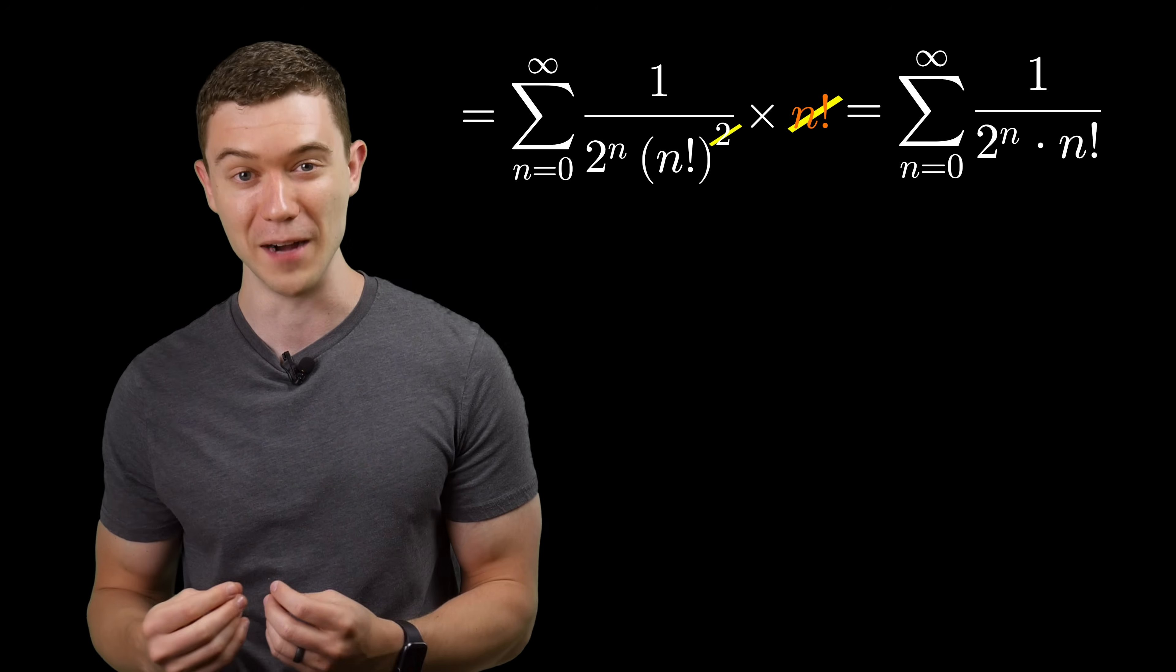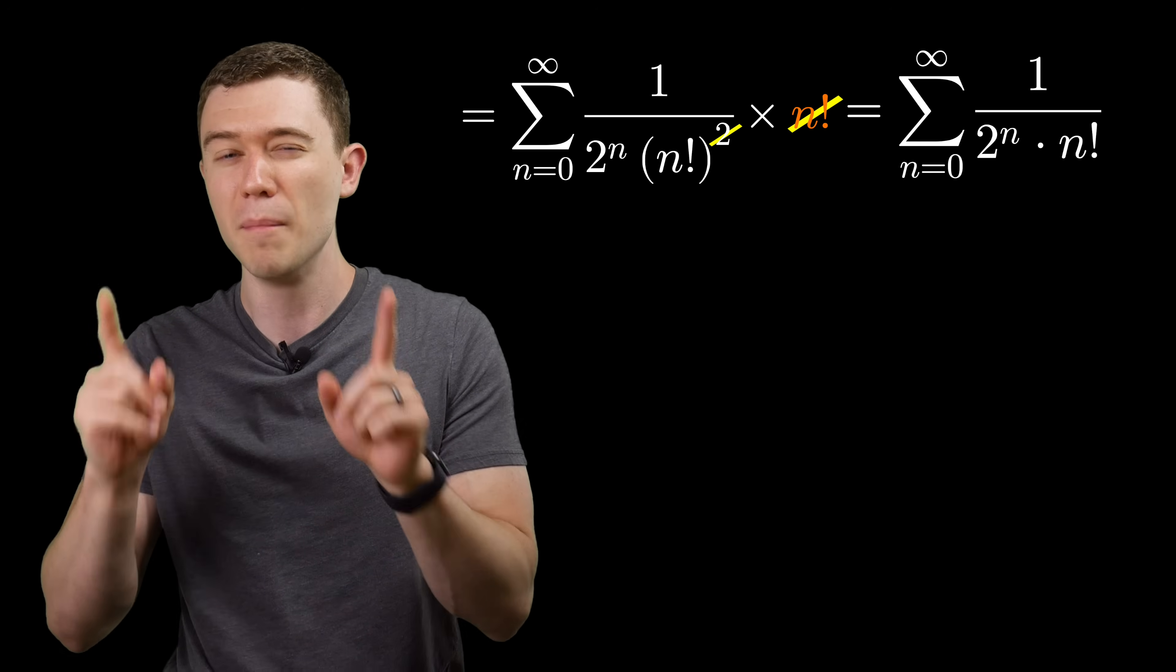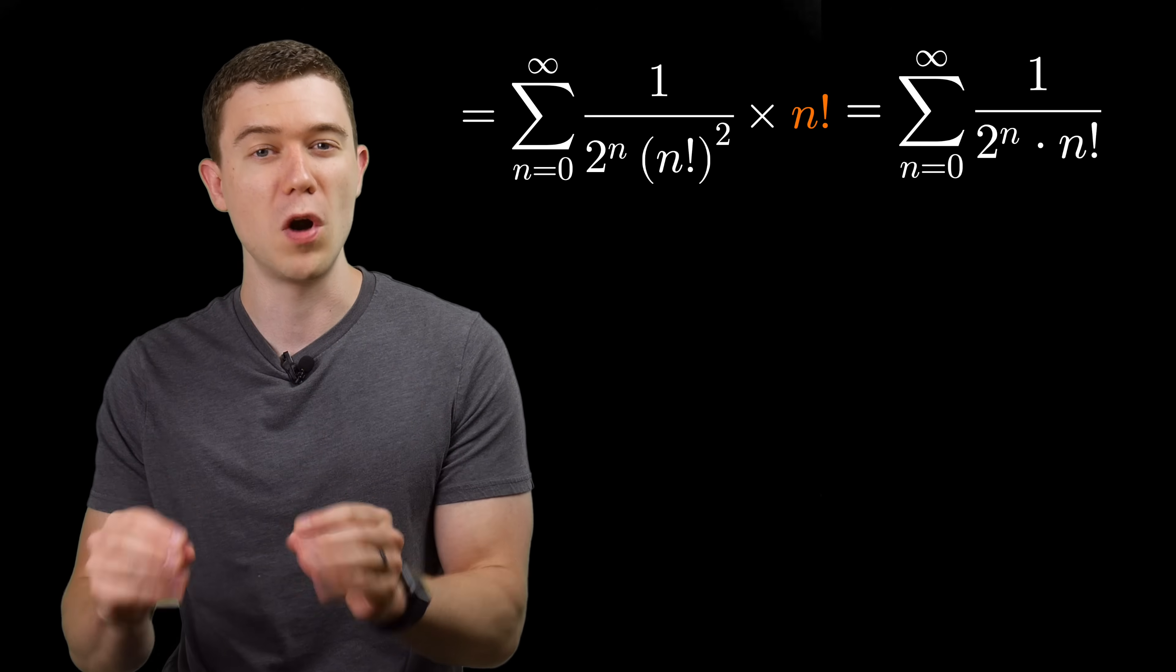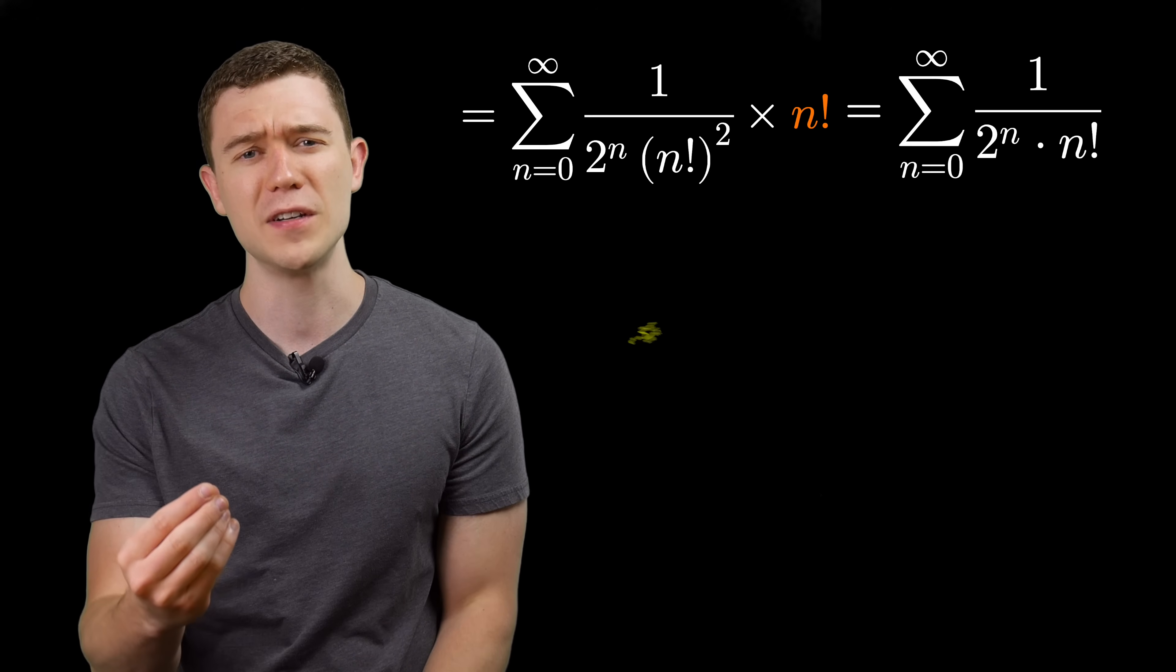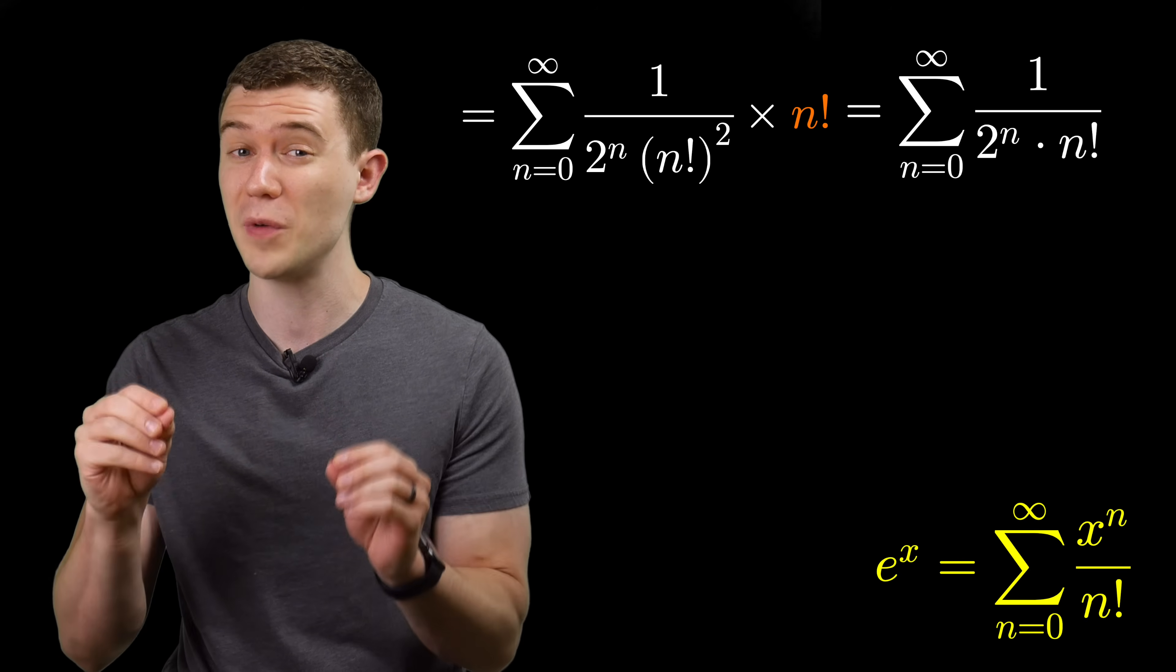And we're finally able to deal with that pesky n factorial squared, since we can just cancel out an n factorial in the numerator and denominator. And you might think we're done. Indeed, this is a great answer. But we can do even better. Think back to how we originally rewrote that first infinite sum using the power series representation of e to the x.